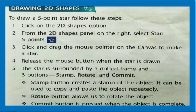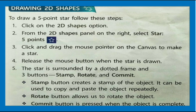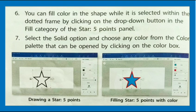Drawing 2D shapes: To draw a 5-point star, follow these steps. Click on the 2D Shapes option. From the 2D Shapes panel on the right, select Star 5 Points. Click and drag the mouse pointer on the canvas to make a star; release the mouse button when the star is drawn. The star is surrounded by a dotted frame and three buttons: Stamp, Rotate, and Commit. Stamp creates a copy, Rotate rotates the object, and Commit is pressed when the object is complete. You can fill color by selecting the Solid option in the Fill category and choosing a color from the color palette.